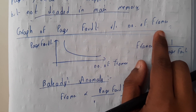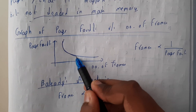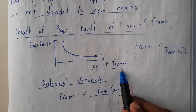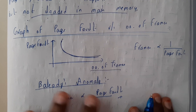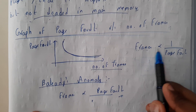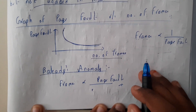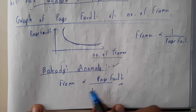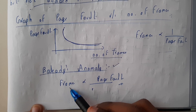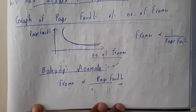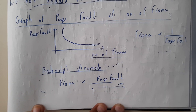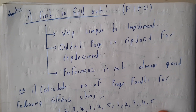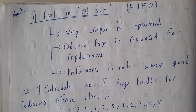If you plot page faults versus number of frames, as the number of frames increases the page fault count reduces, but it never goes to zero — it becomes constant. So frames are inversely proportional to page faults. However, according to Belady's anomaly, in many situations frames are directly proportional to page faults. We'll verify this with a problem using the FIFO algorithm.